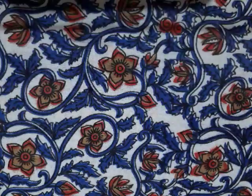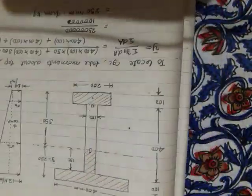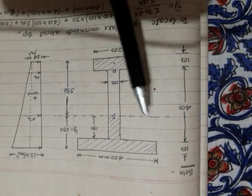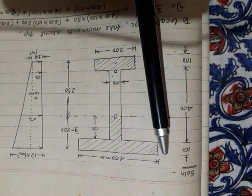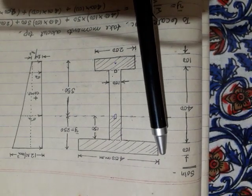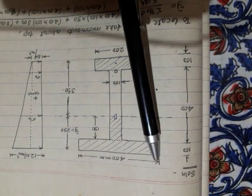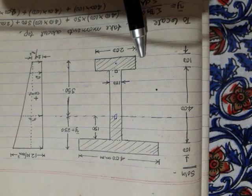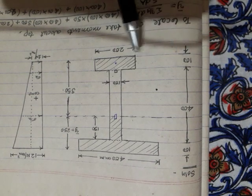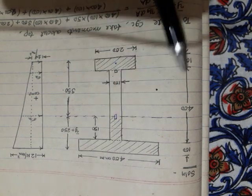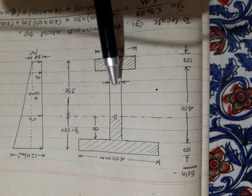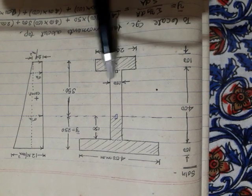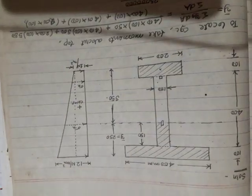The given I-section has a top flange of 400 mm × 100 mm, a bottom flange of 200 mm × 100 mm, and a web that is 400 mm in length and 100 mm wide.